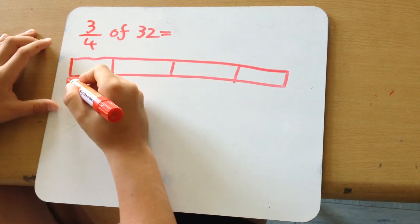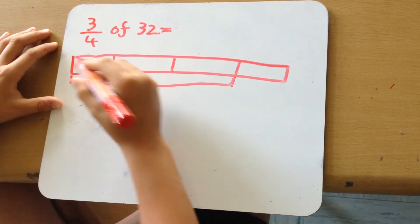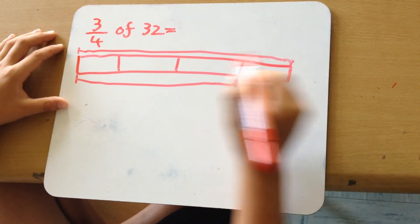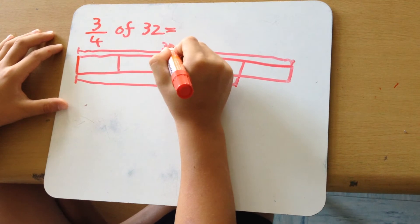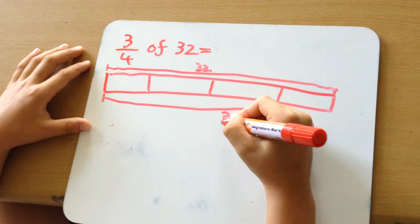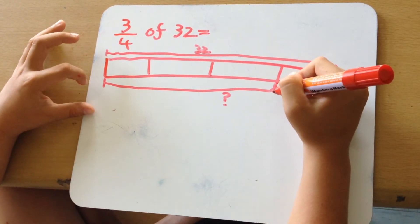And we're trying to find the amount of three of them. But first we have to know what the total is. The total is 32. And we want to know what is the amount of three blocks.